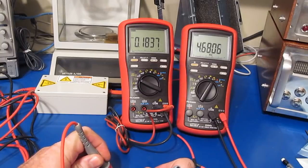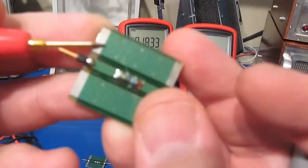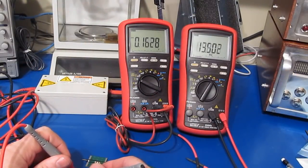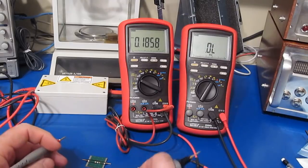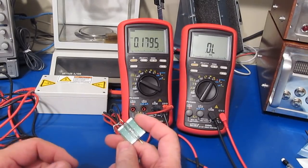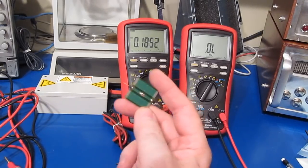Typically the 0805 parts are only good for an eighth watt and the 1206s are good for a quarter watt. So if we wanted to dissipate more power with one of these 0805s we could put two in series, and that's what I've done here.